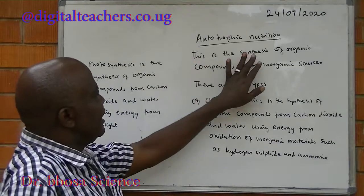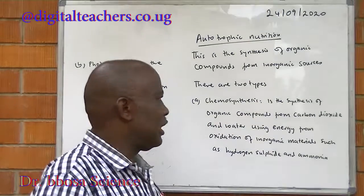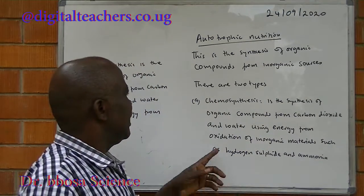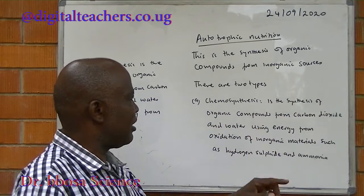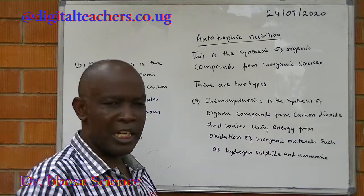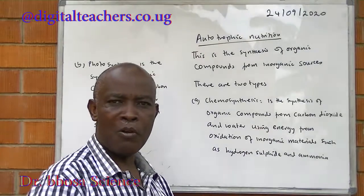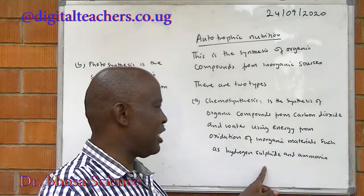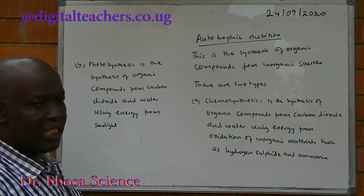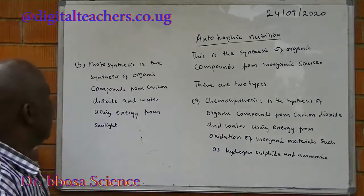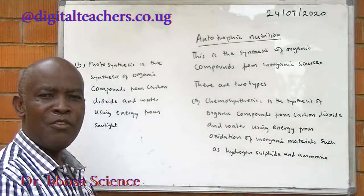Autotrophic nutrition is the synthesis of organic compounds from inorganic sources. There are two types. Chemosynthesis is the synthesis of organic compounds from carbon dioxide and water using energy from oxidation of inorganic compounds, such as hydrogen sulfide and ammonia. Photosynthesis is the synthesis of organic compounds from carbon dioxide and water using energy from sunlight.